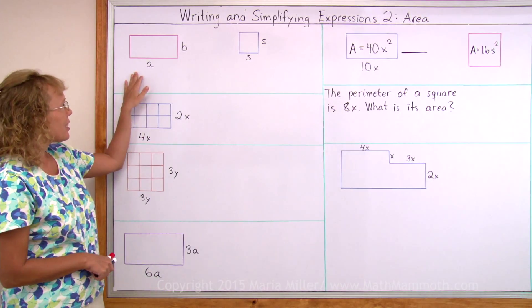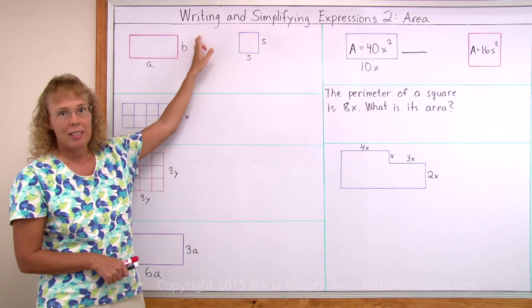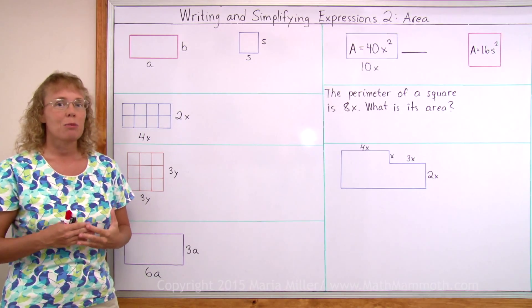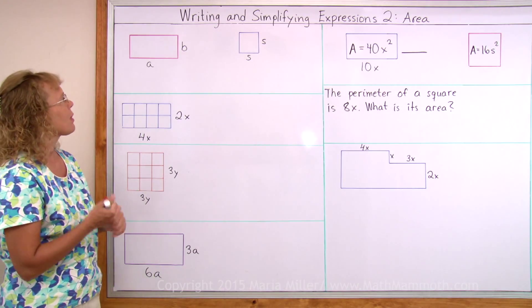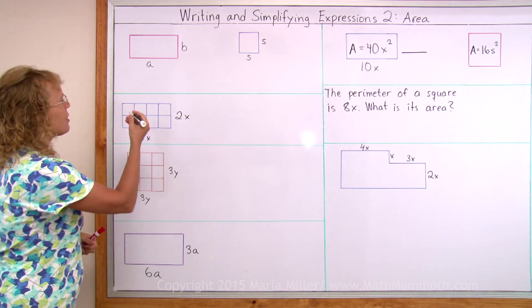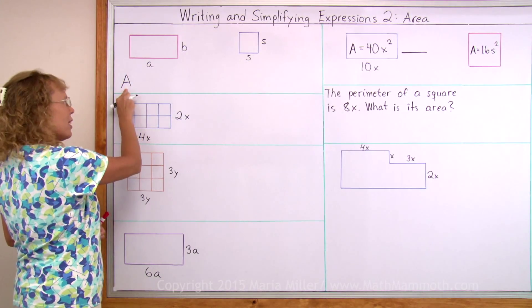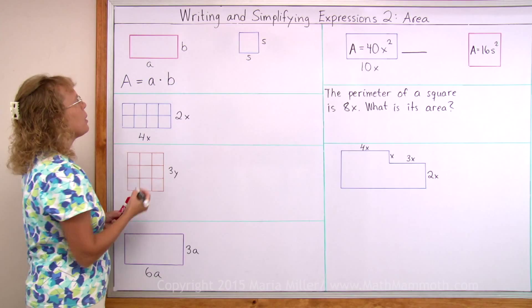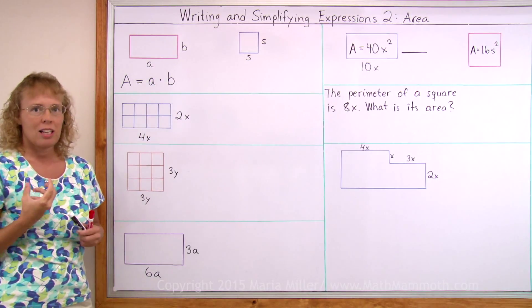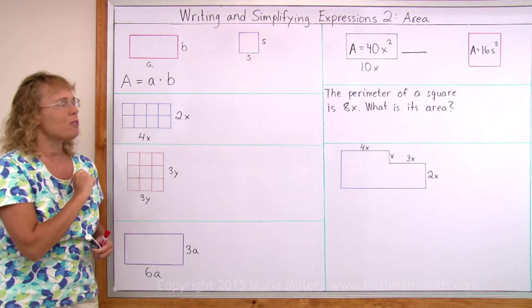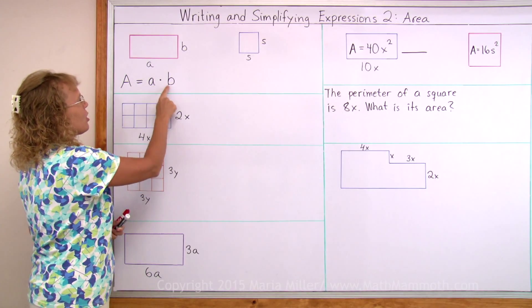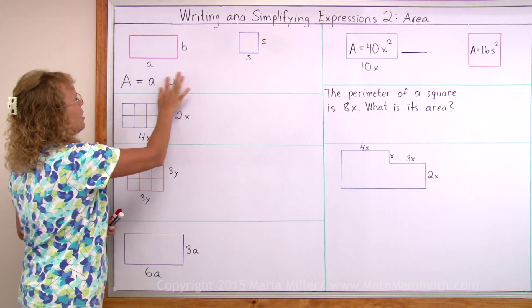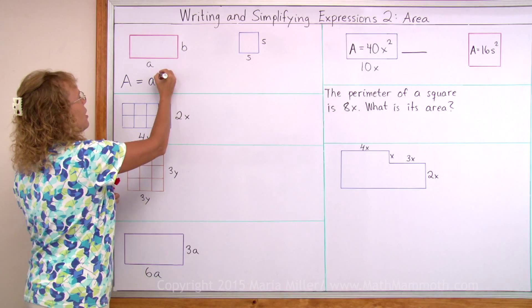Here I have a rectangle, its sides are A and B, A units, B units. And you know that to calculate area of a rectangle we need to multiply the side lengths. So I'm going to write now an expression for the area, A meaning here area. It is calculated by multiplying A times B. I'm using the raised dot here because in algebra we do not use this little cross for multiplication. However, since these two are variables or letters, I can omit it. So it's basically just AB. The area equals AB.